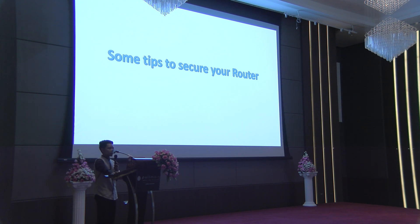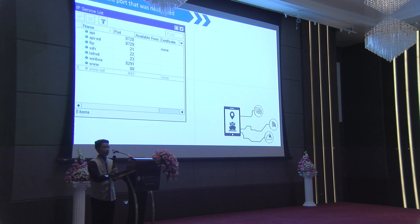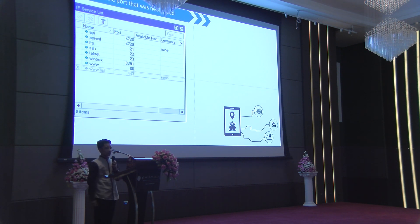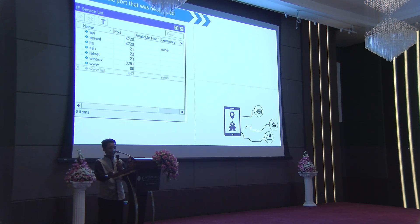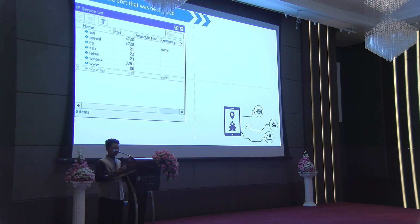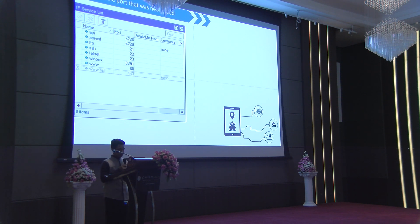Some tips to secure your router: The first is to disable ports that are never used. MikroTik has many services such as API, API-SSL, FTP, and others, but if you use it only at home you probably never use them all. Disable any port that is never used. For example, if you always use Winbox to access your router, disable the WWW service because you never use WebFig to access your router.